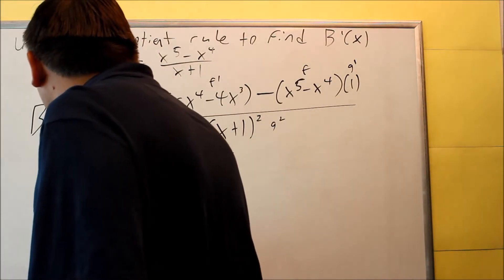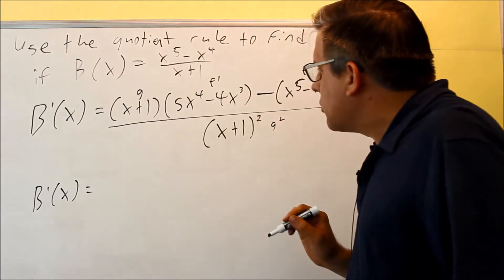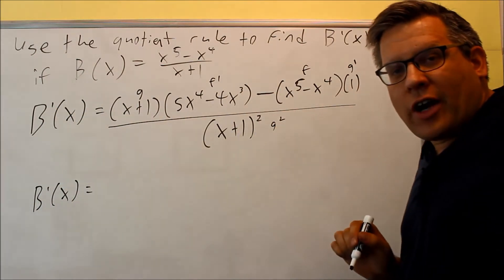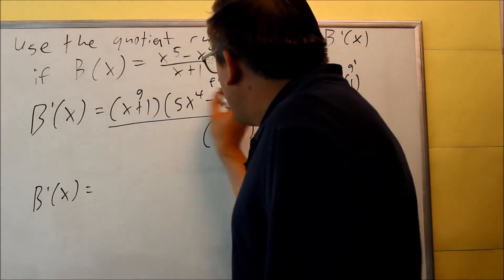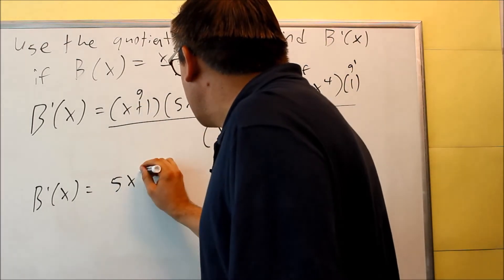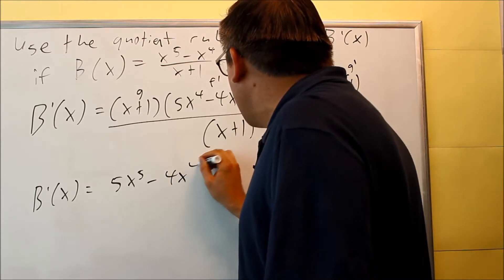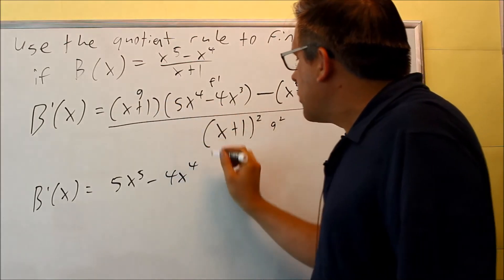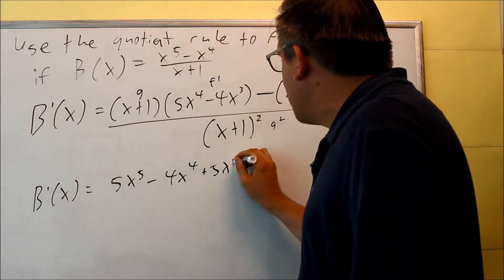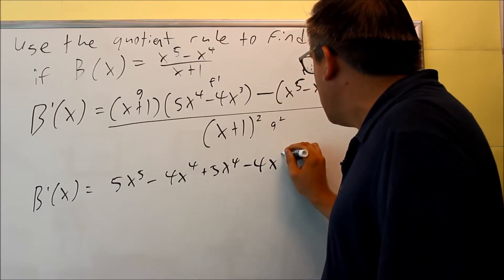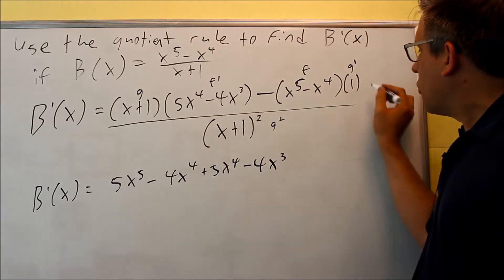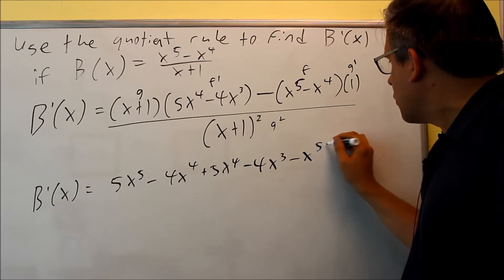Next, we're going to multiply this out. And then simplify it, get our answer. We're going to foil this. 5x to the fifth minus 4x to the fourth. And we'll do the inside one. It's plus 5x to the fourth minus 4x cubed. This one, since we're multiplying by one, we can just subtract these.